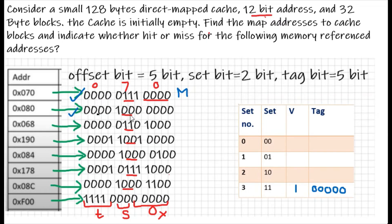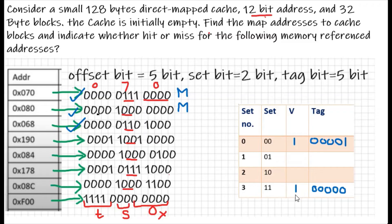For the second address, the set is 00 (set 0), so V=1. The tag value is 00001 (four zeros then 1). This is also a miss because it's the first time this set is accessed. For the third address, the set is 11 again. Comparing the tag: it's 00000, which matches the stored tag — so it's a hit.